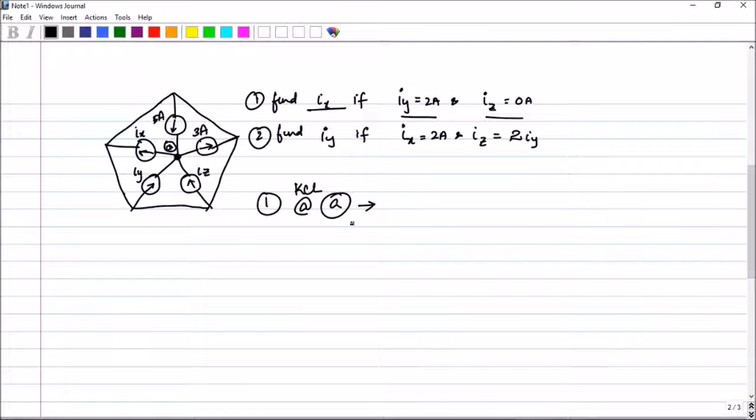Now, let us go one by one. Ix. This current here. Ix. Is leaving below. So plus. You have a positive sign. Iy and Iz are entering. So minus Iy. Minus Iz. 3 amperes is leaving. So you get plus. And 5 amperes is entering. You get minus. So minus 5 equal to 0.